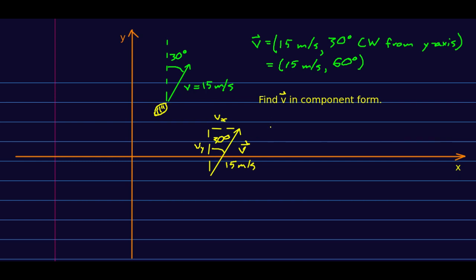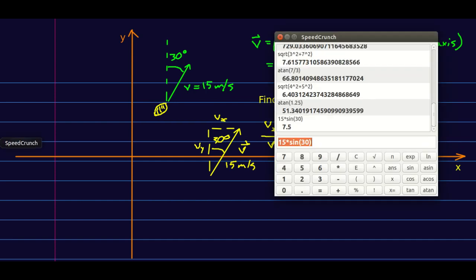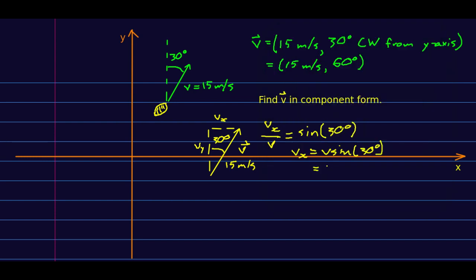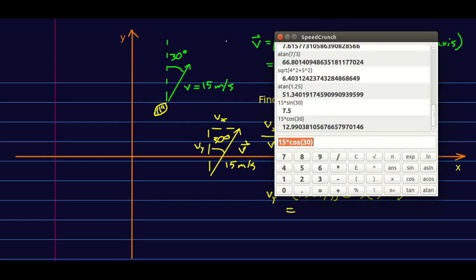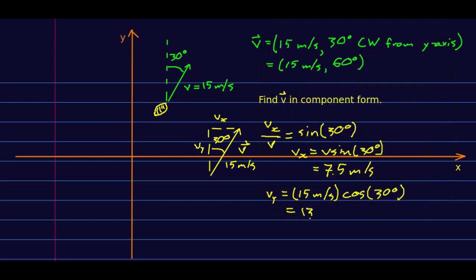So we can just do usual trigonometry. Vx over V, that is the opposite over the hypotenuse. And so that's sine of the angle we're talking about, 30 degrees, right? And so Vx is V sine 30 degrees. So that is 7.5. Similarly, you can see that Vy must be V times cosine of 30 degrees, more or less 13. Okay, and there.